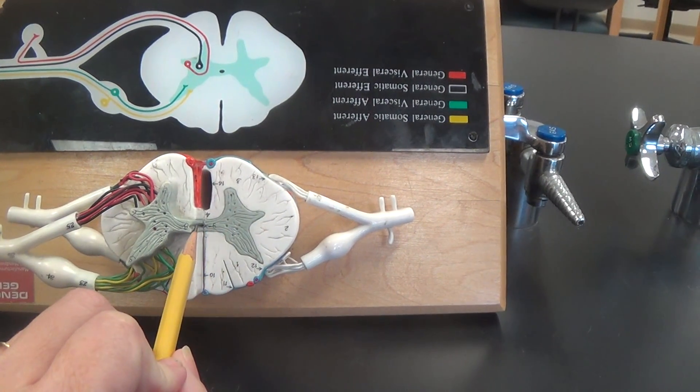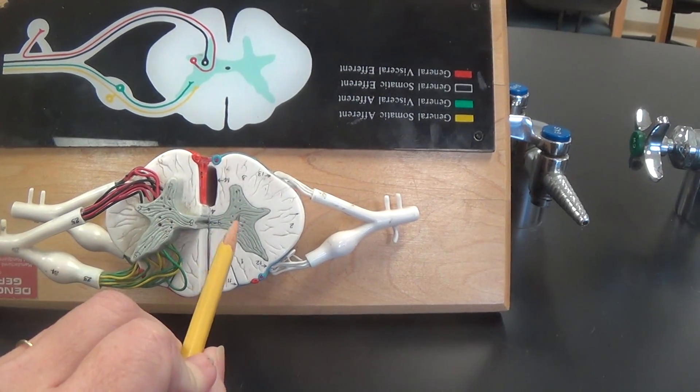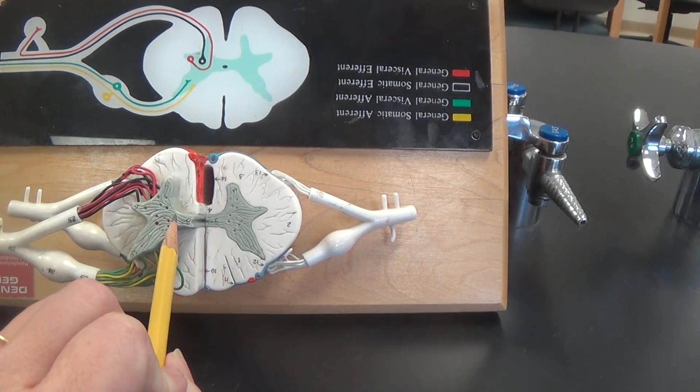In the middle of that there is a small space called the central canal and the gray commissure connects the left and right areas of the gray matter.